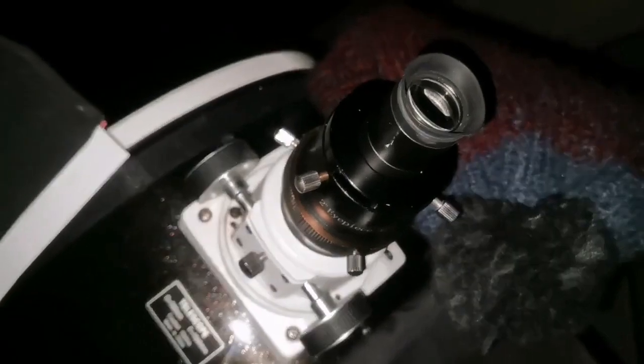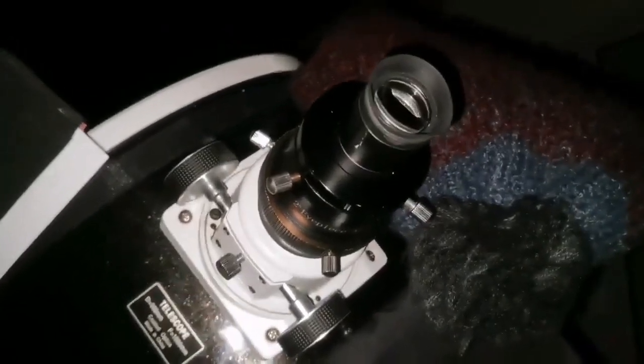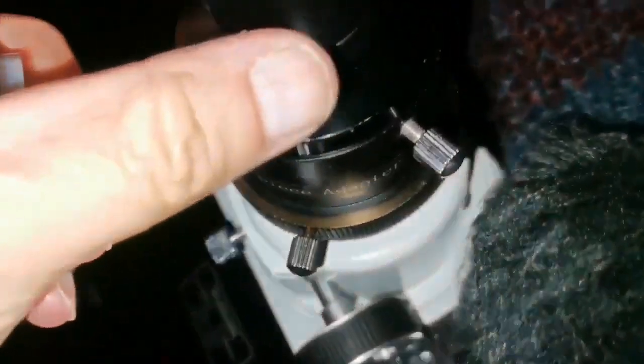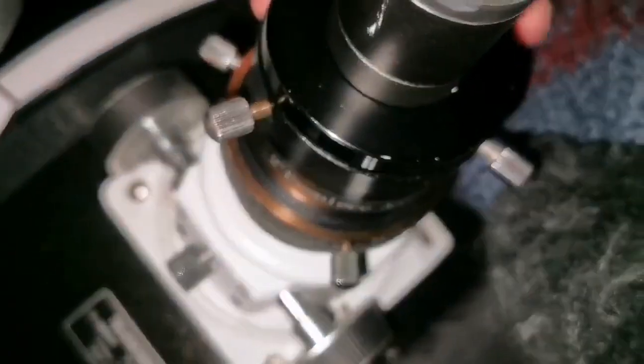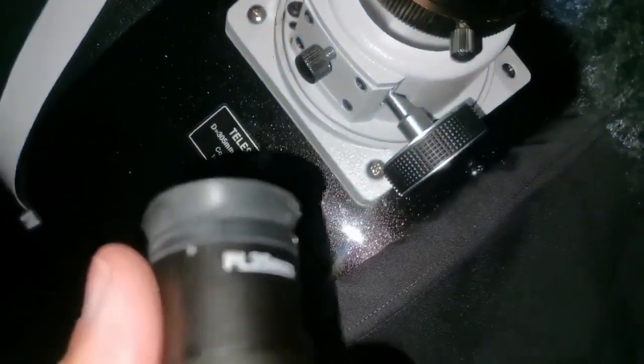Okay, I was observing with the Tele Vue Ethos 21, one of the most expensive eyepieces in the market. After that, let me compare it as a joke with one of the cheapest eyepieces you can get. They usually come free with any telescope. This is a 25 millimeter Plossl. There is no brand name or anything. They sell them in bucket loads.